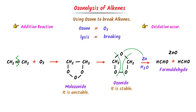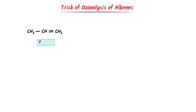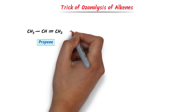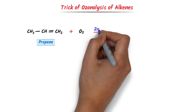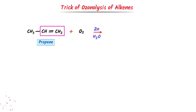Note down all these important points. Now I will teach you a super easy trick to solve any question on ozonolysis of alkenes. For example, consider propene. In the first step I add ozone, and in the second step I add zinc plus water. We always look for the double bond in the alkene. We will always break the alkene at the double bond.